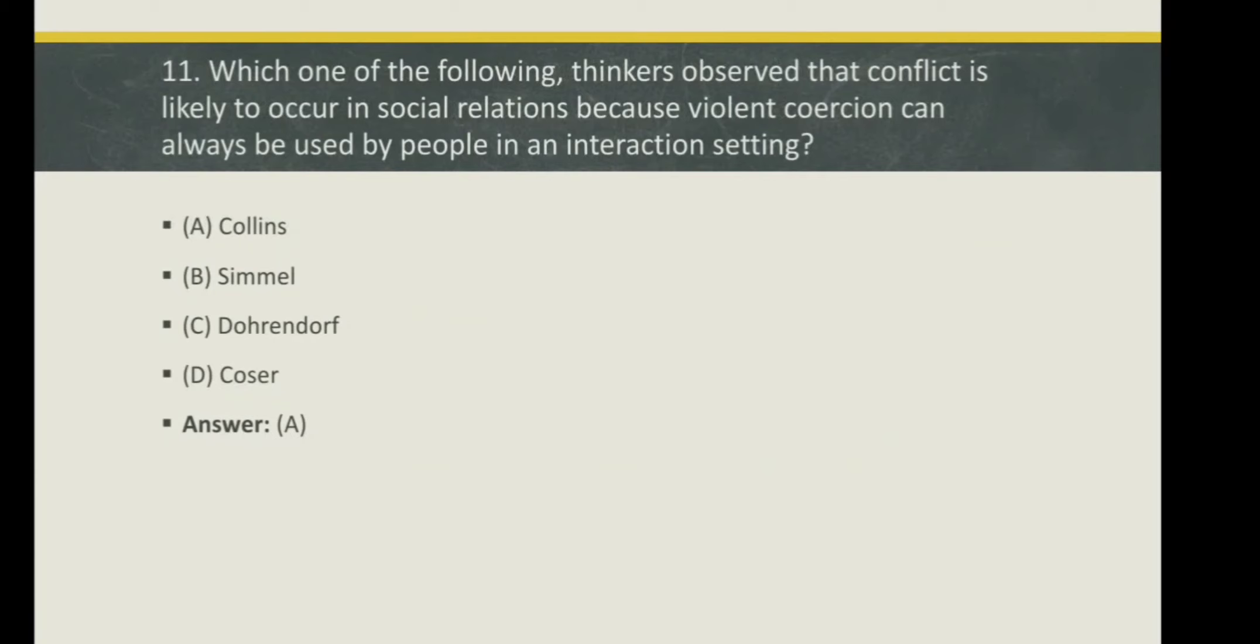Which one of the following thinkers observed that conflict is likely to occur in social relations? Because violent cohesion can always be used by people in an interaction setting.